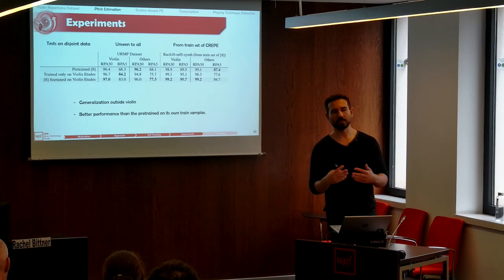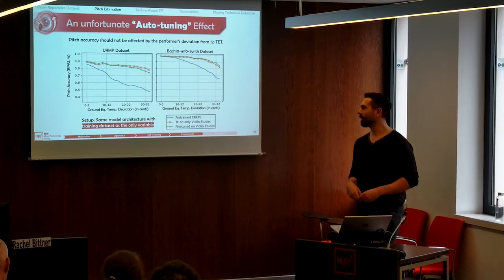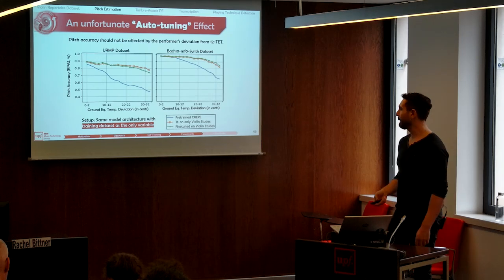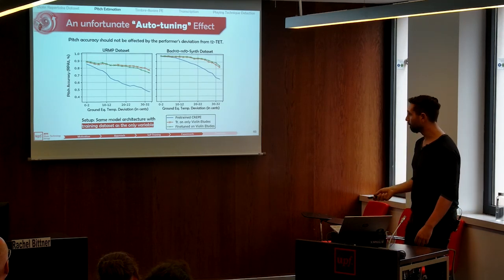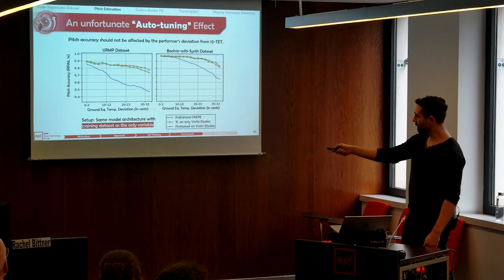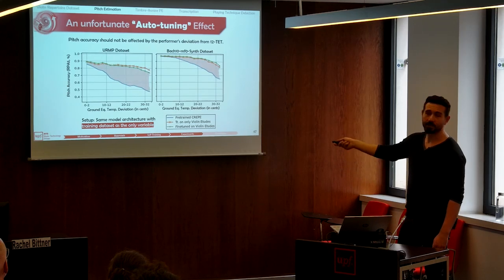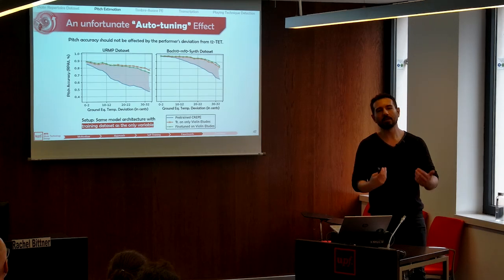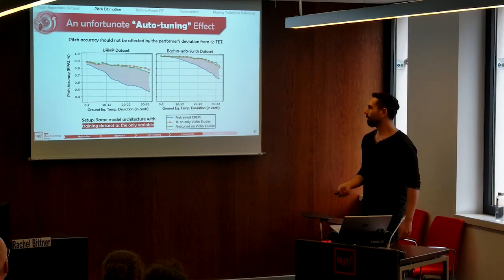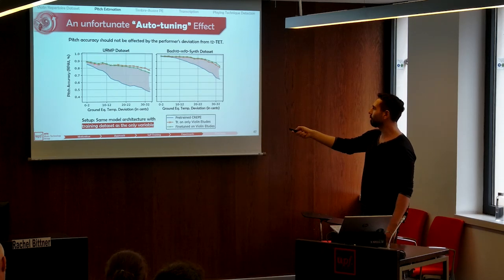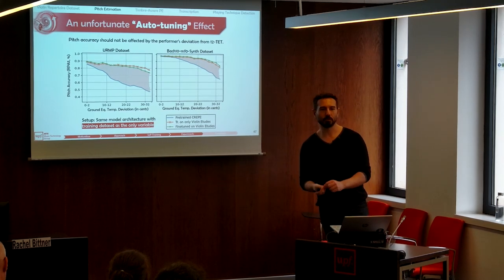The main part I want to highlight is an unfortunate auto-tuning effect in training deep learning-based pitch estimators. Pitch accuracy should not be affected by performance deviation from 12-tone equal temperament — we expect completely flat curves. The x-axis shows ground truth deviation from equal temperament and we expect accuracy to remain the same. But as you see, this is not the case. Networks have the tendency to overfit to equal temperament, and if you're not careful it can overfit even more. Ours is still not perfect — not completely flat — but it improved. We introduced a new problem and a slight solution, but it remains an open problem.